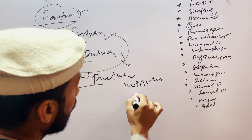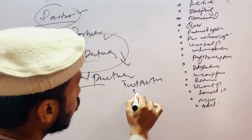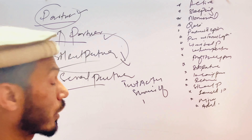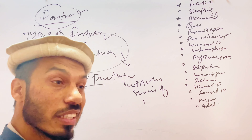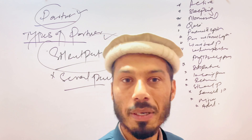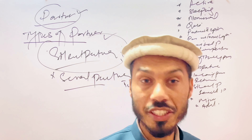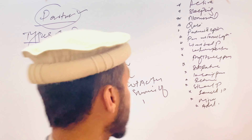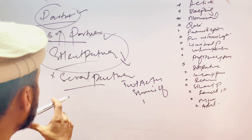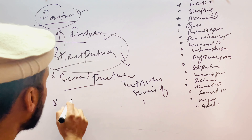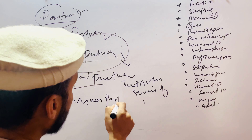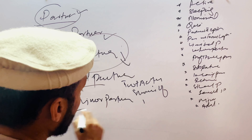The next type is the secret partner. Secret partners are those who do not openly show themselves as partners of the business, but they participate secretly in all activities and operations. This type is called a secret partner.